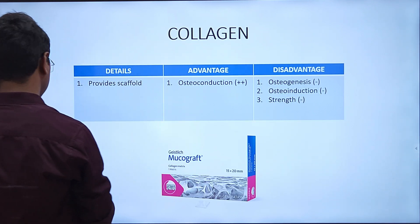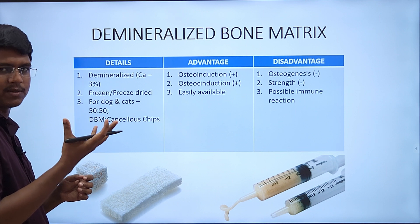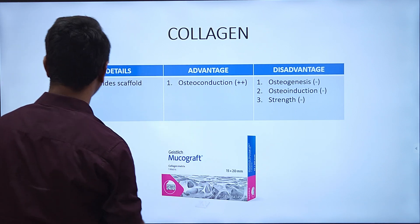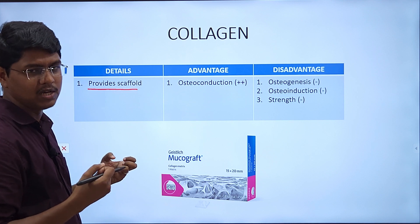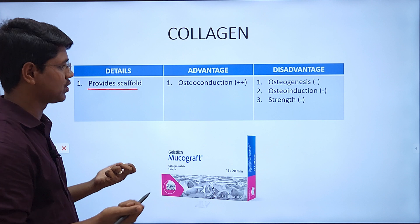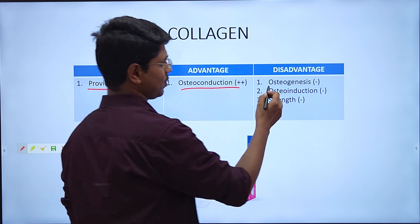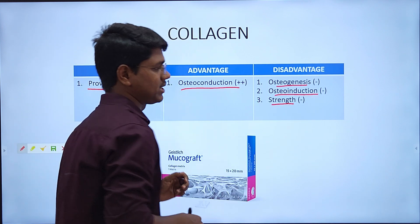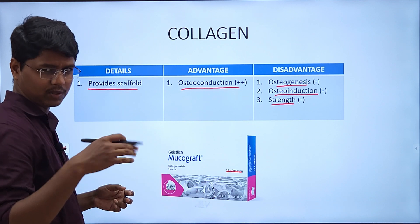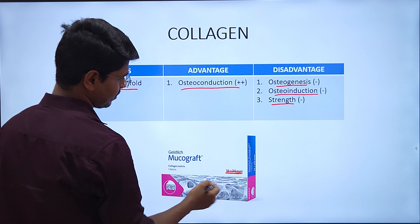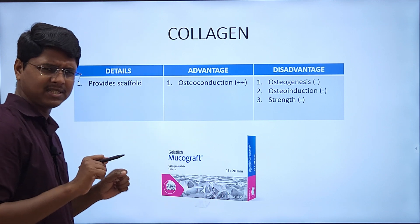Next is collagen. When bone is demineralized it has a higher collagen percentage, and when you purify that collagen it is simply collagen. It provides a scaffold, meaning it provides the framework, so it has osteoconduction property. It has no osteogenesis, no osteoinduction, and no strength. These are commercially available in various dimensions (e.g., 15–20 mm). In normal practice it is very costly.